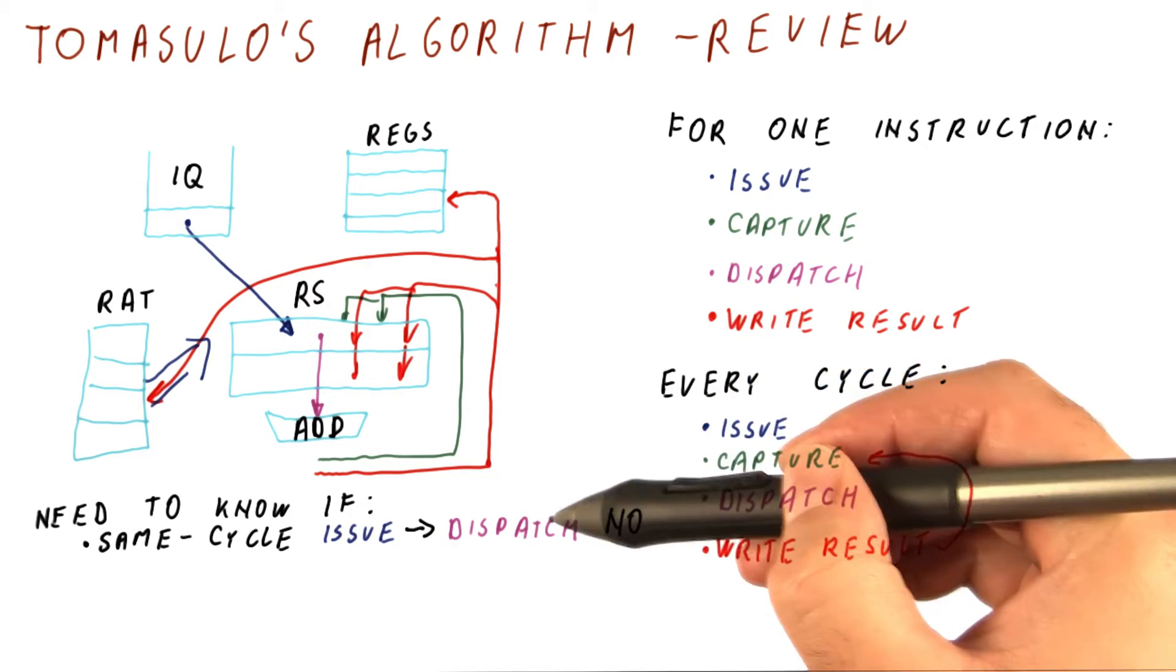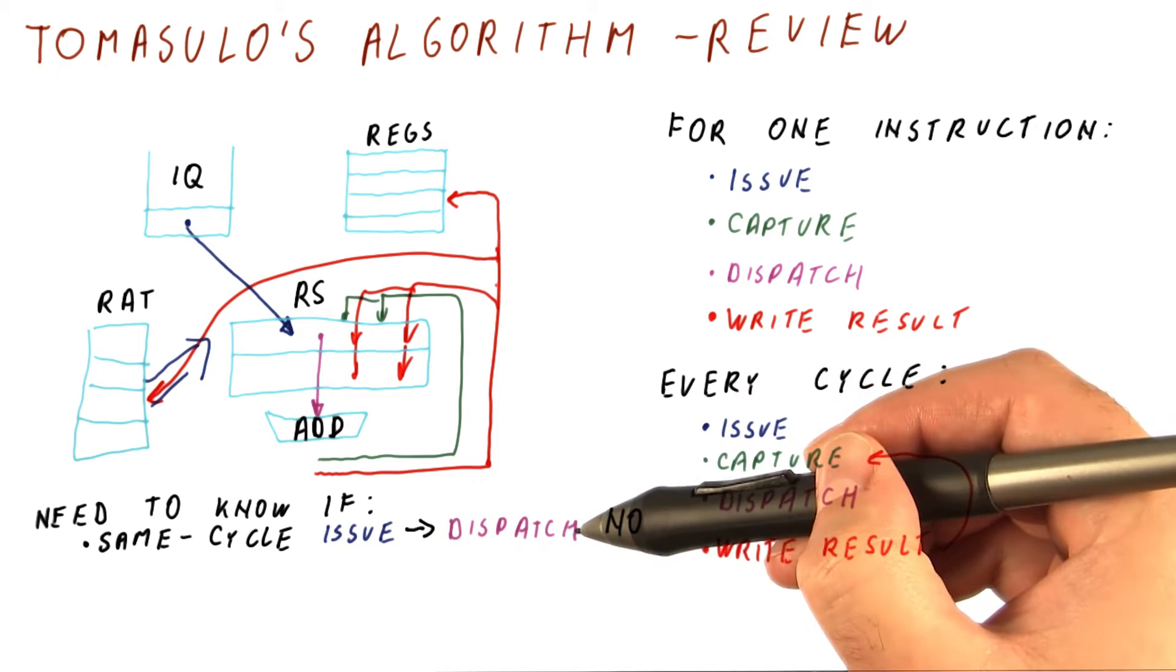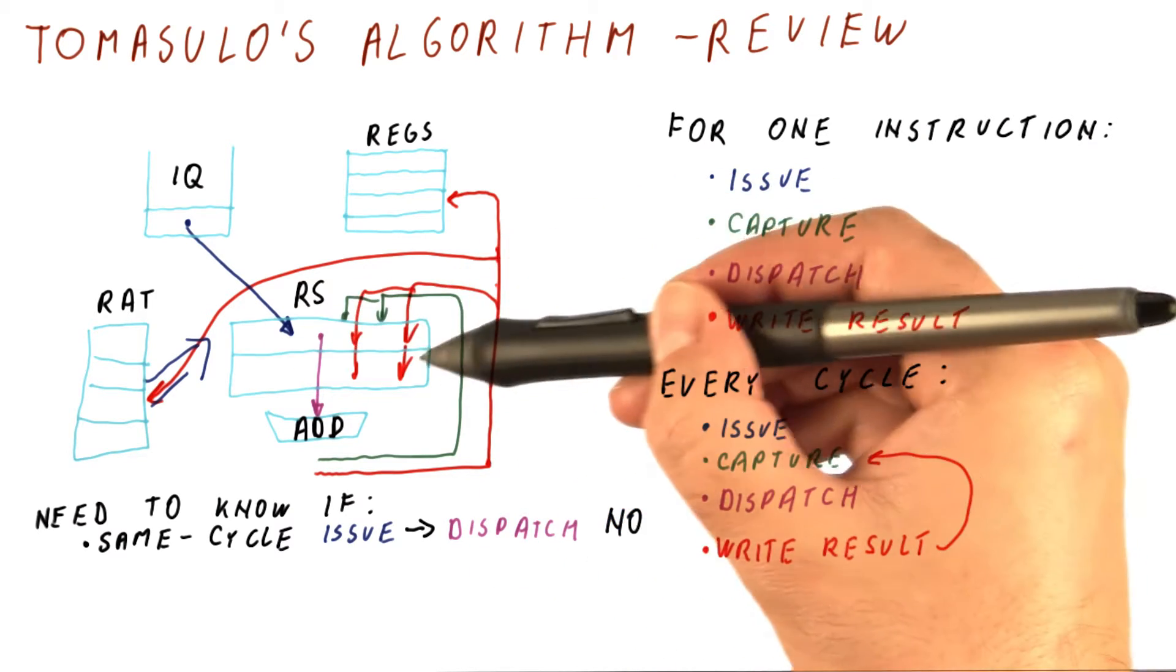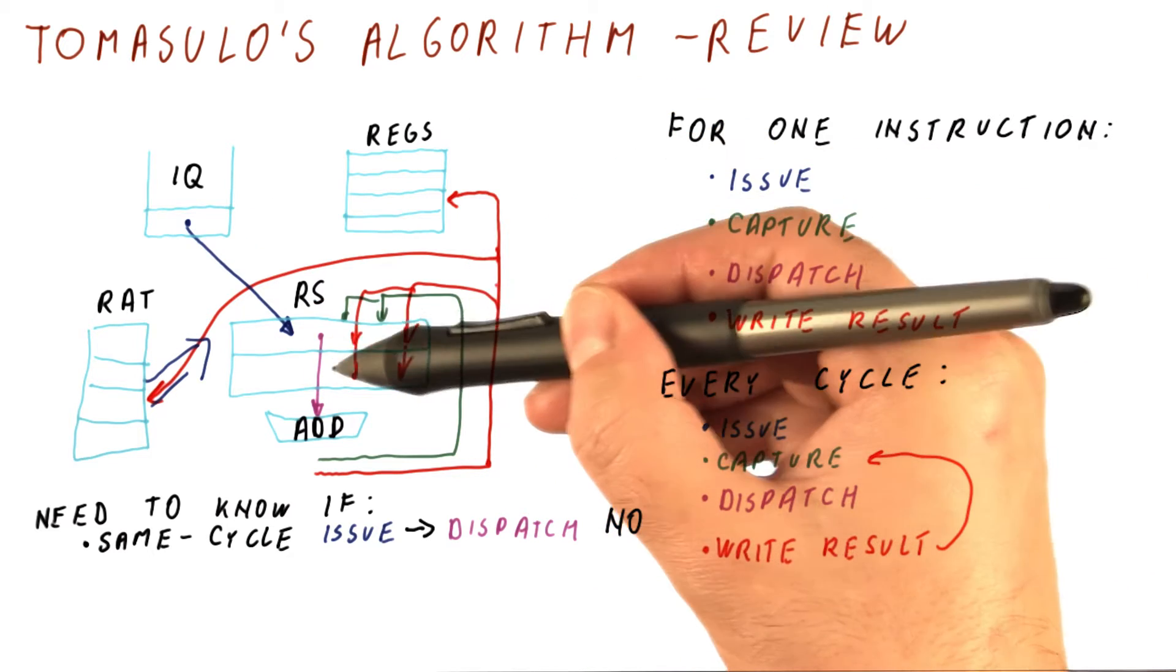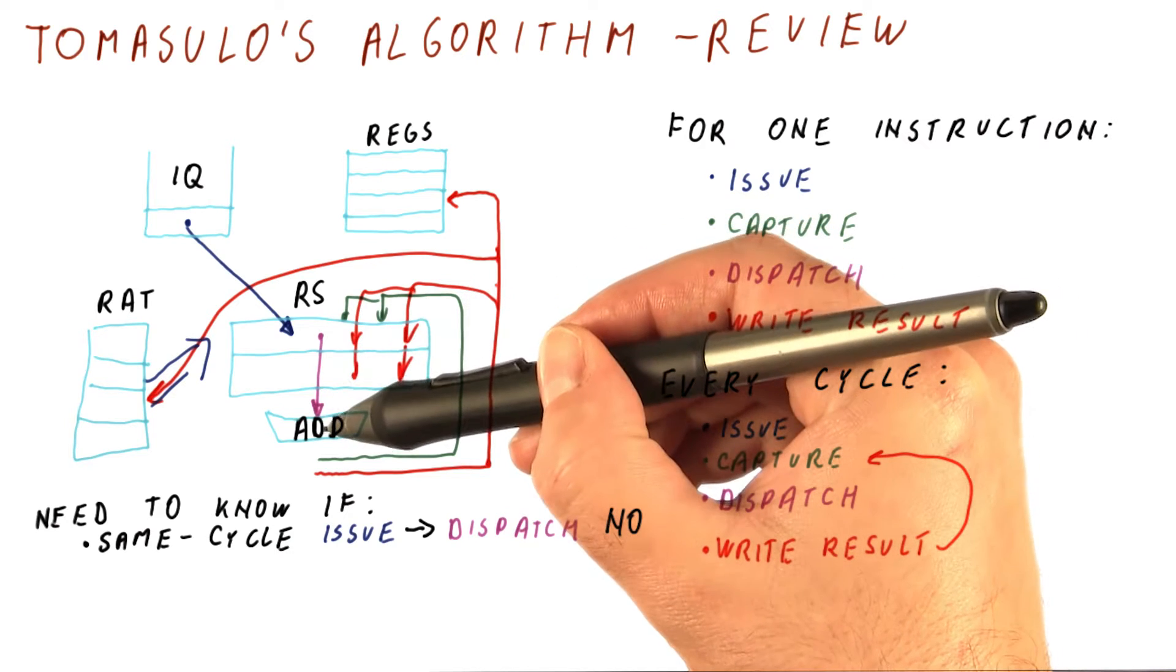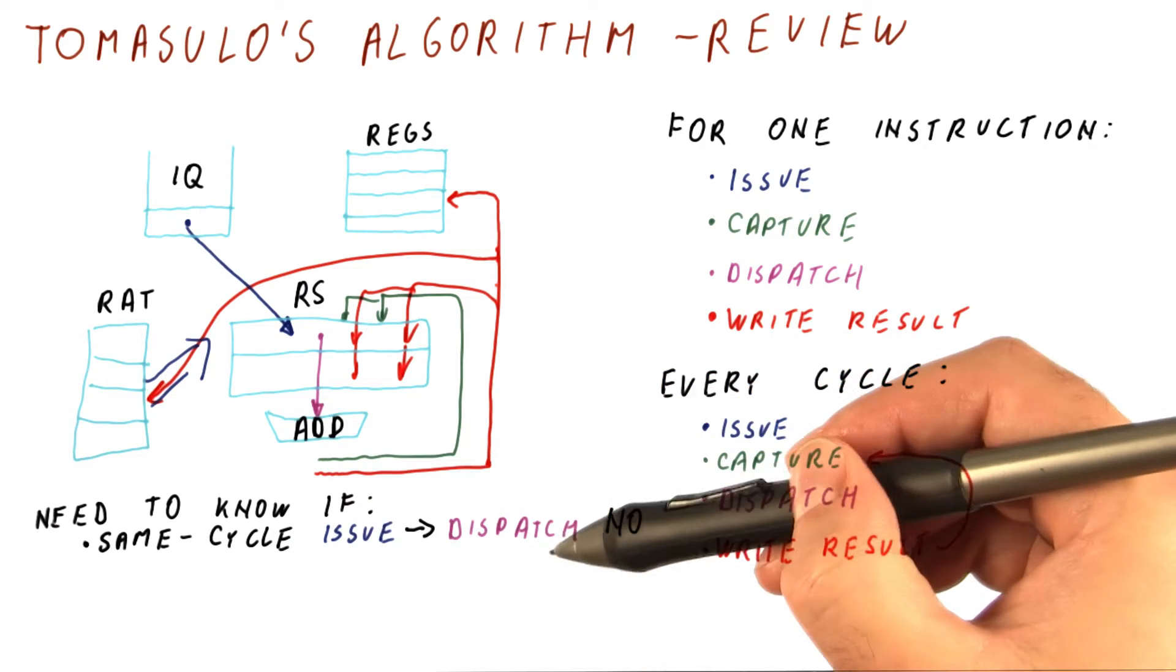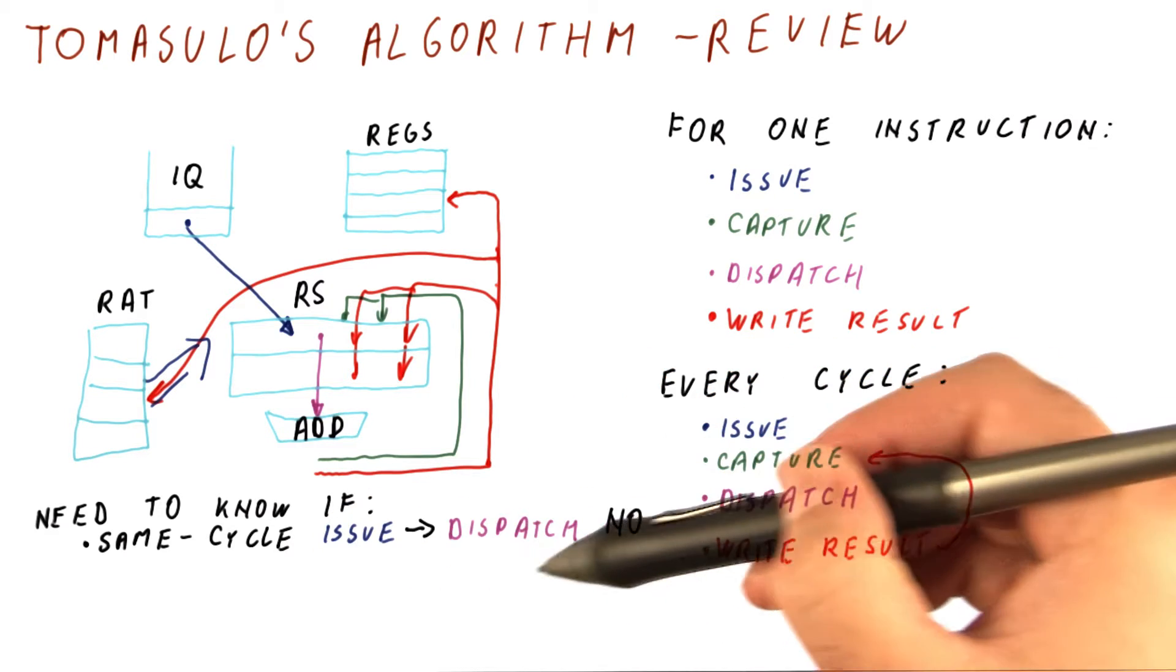And that reservation station is not ready yet to be recognized as a dispatchable instruction. So pretty much a reservation station is treated as empty during this cycle, while we are dispatching the instruction. And only starting in the next cycle, that instruction becomes eligible for dispatch. But it is possible to design the processor in a way that allows same cycle issue and dispatch.